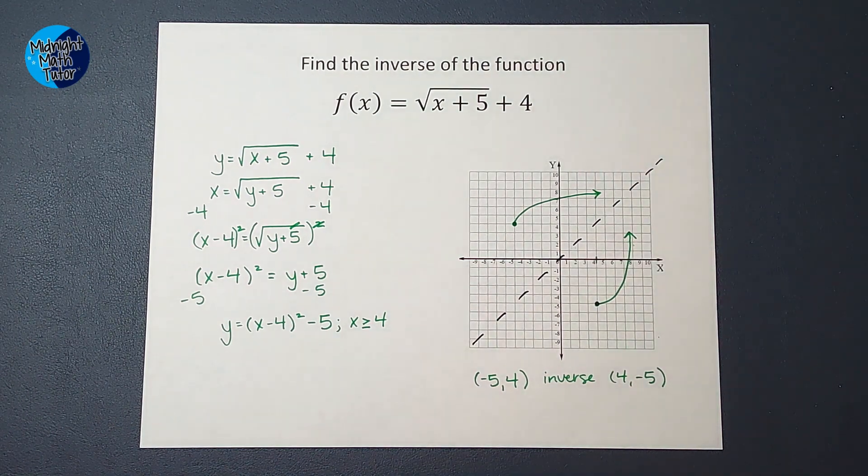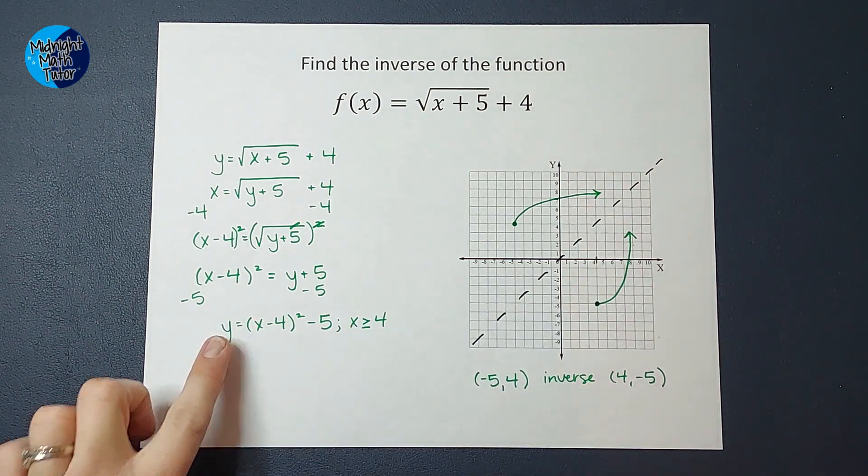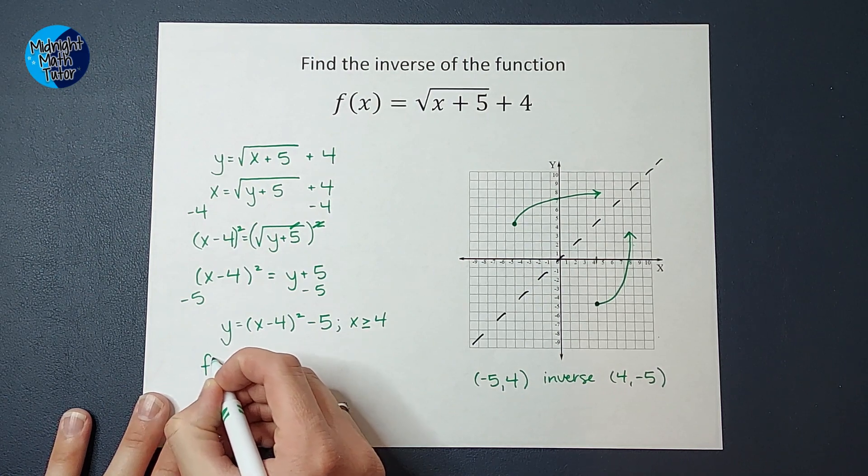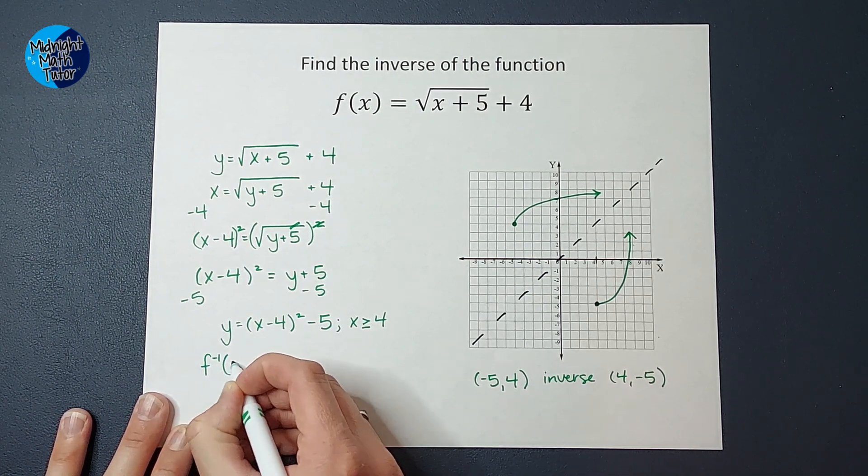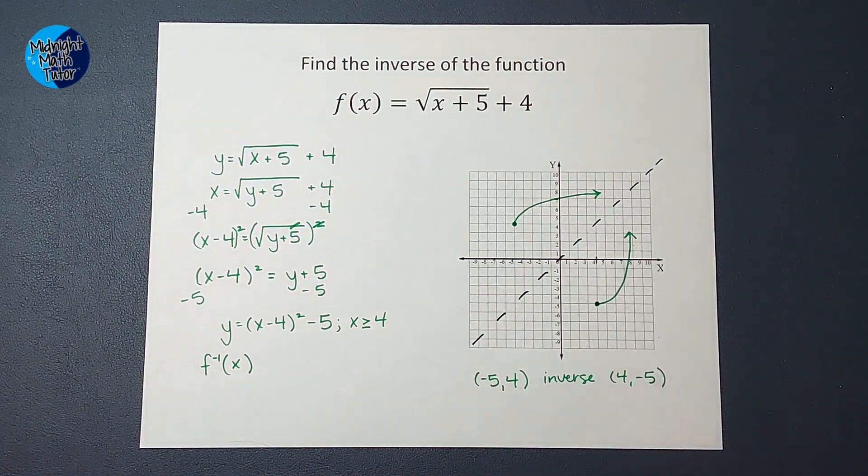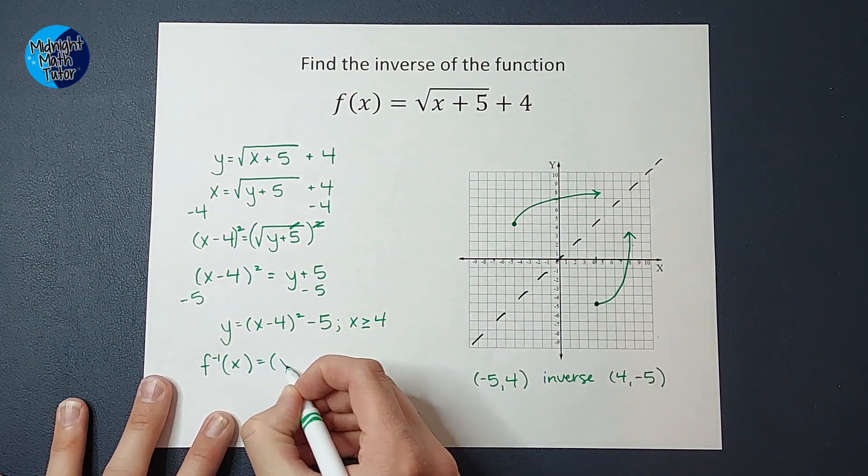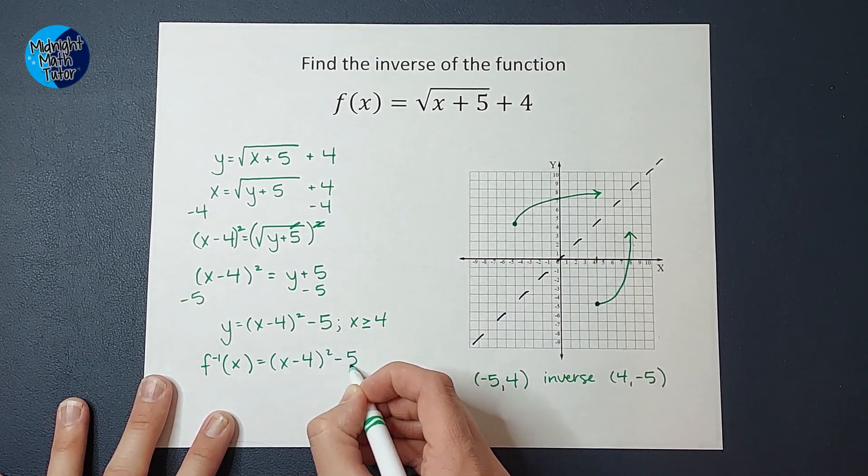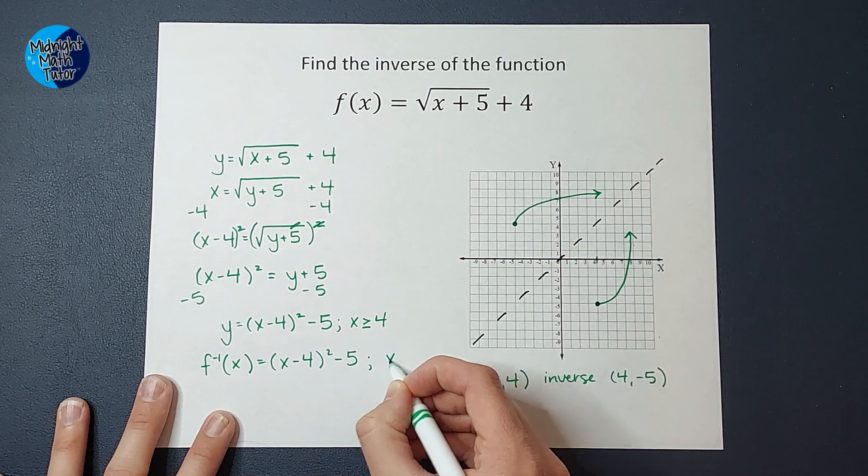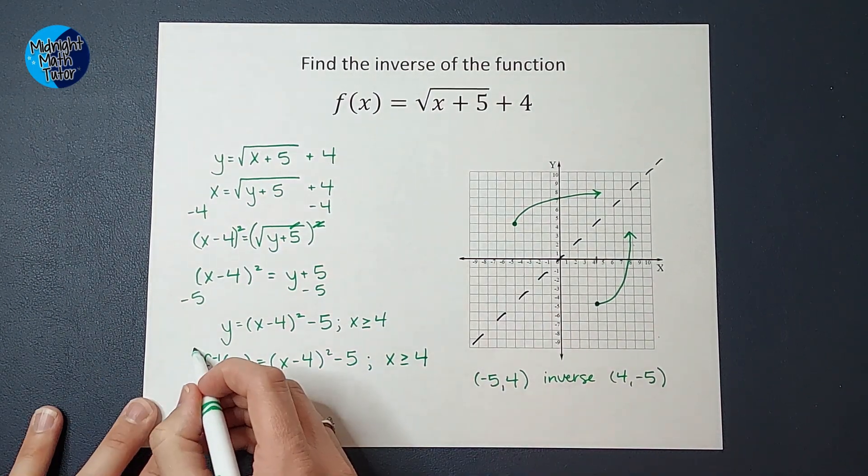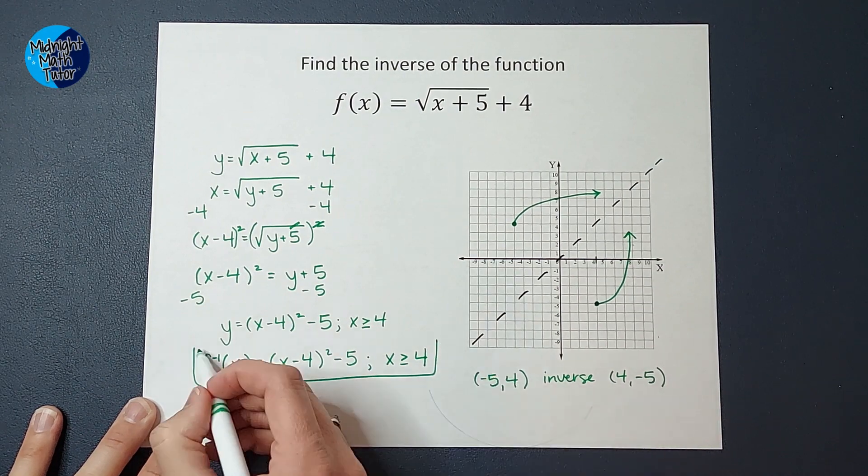But the last thing I need to do, you might get docked if you forget to do this, just so you know, is we need to change this y, right? We're going to change it to f inverse of x. You have that little negative one there, equals, and then we have the x minus 4 squared minus 5, and then remember your restriction. And that is my answer.